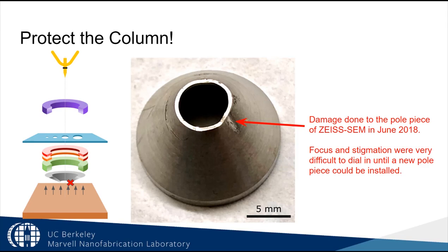This happened to Zeiss SEM in June of 2018, when someone ran the stage into the pole piece, which is a protective piece below the final objective lens. While it was possible to use the tool in this state, it was very difficult to correct the beam conditions. It is very important to be aware of your sample with respect to the delicate components of the beam to protect them from damage.